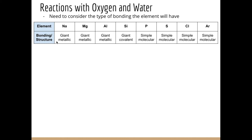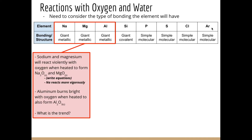Sodium, magnesium, and aluminium have giant metallic structures. Silicon has a giant covalent structure. Phosphorus, sulfur, chlorine, and argon are simple molecular, where argon is just monoatomic — just a single atom. So if we consider reactions with oxygen, we need to consider what these bonding models will mean for these types of reactions.